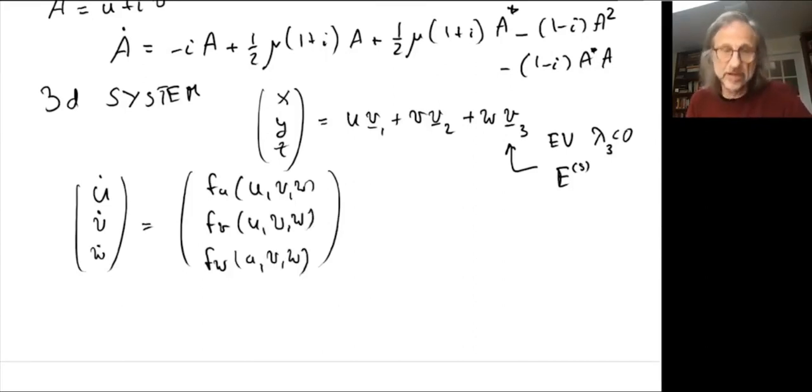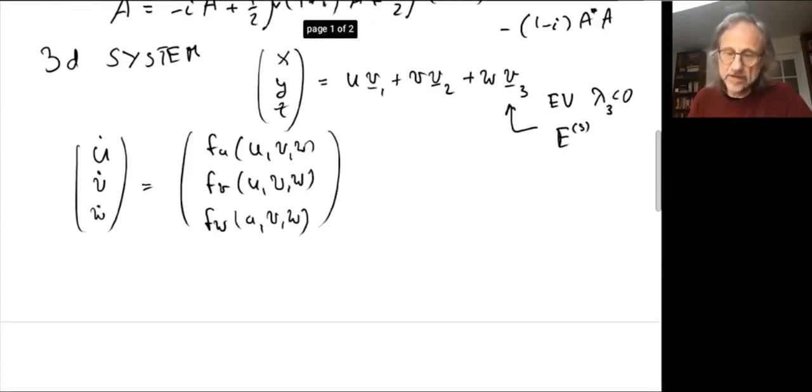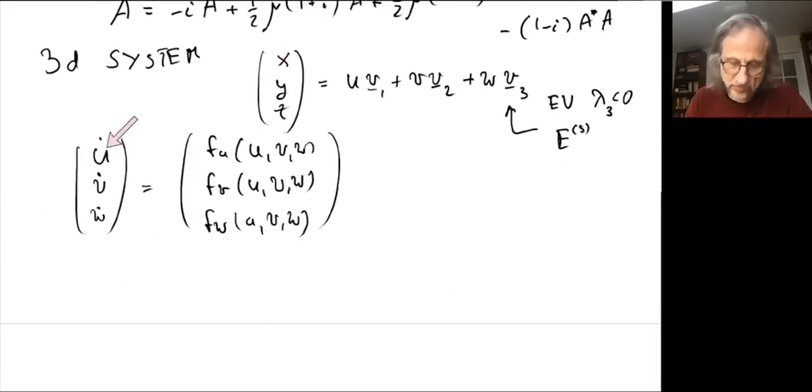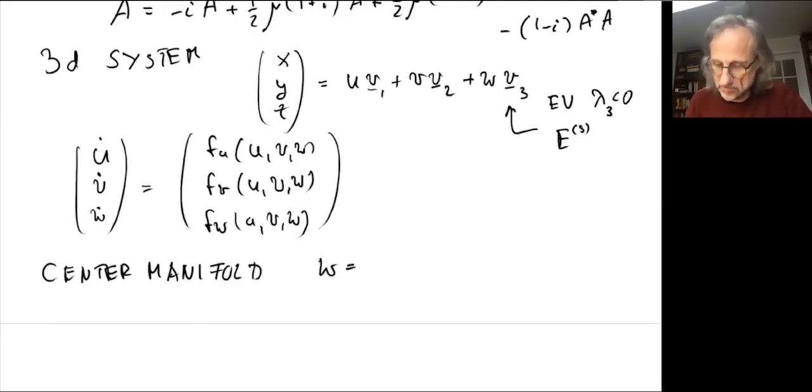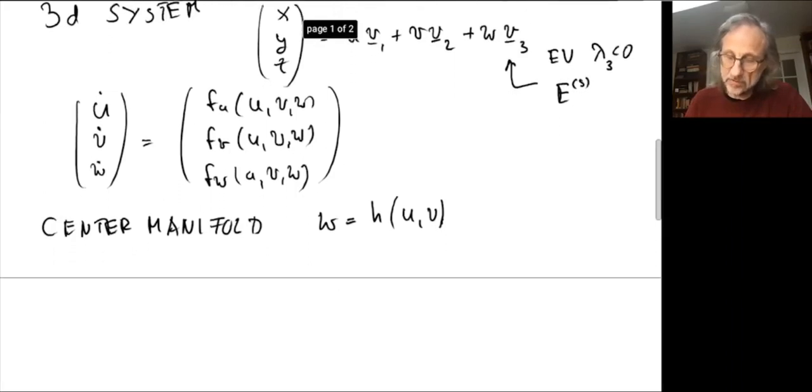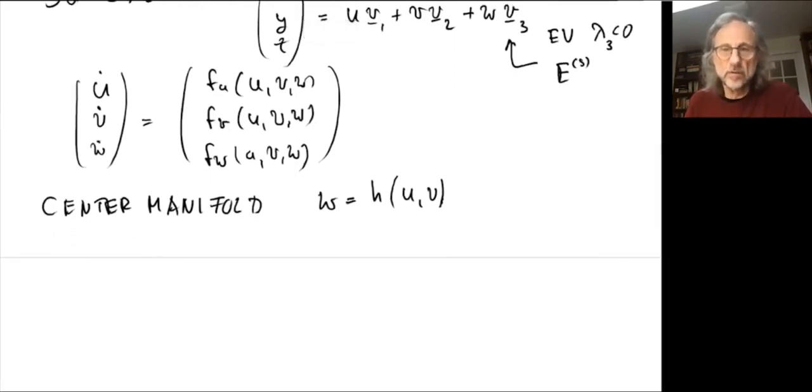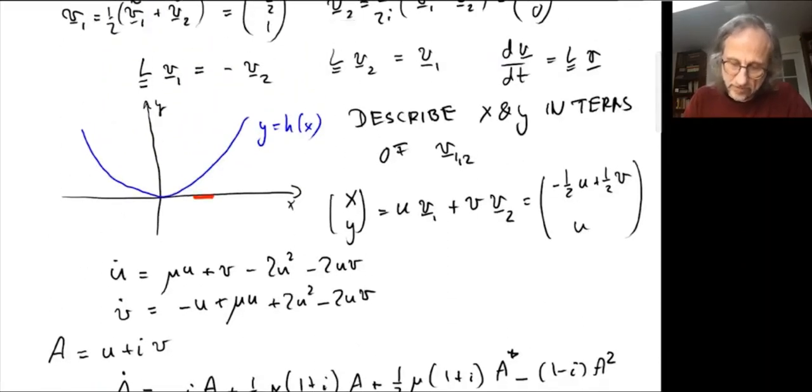By algebra, we rewrite these equations in terms of U, V, W. We would get something like (U dot, V dot, W dot) equals (F_U, F_V, F_W), and each of them depends on U, V, W. That's just algebra rewriting. So now comes the center manifold reduction step, that we say near the bifurcation, we can describe the whole state—all U, V, and W—in terms of only the coordinates on the center eigenspace. That means W is given by some function H of U and V.